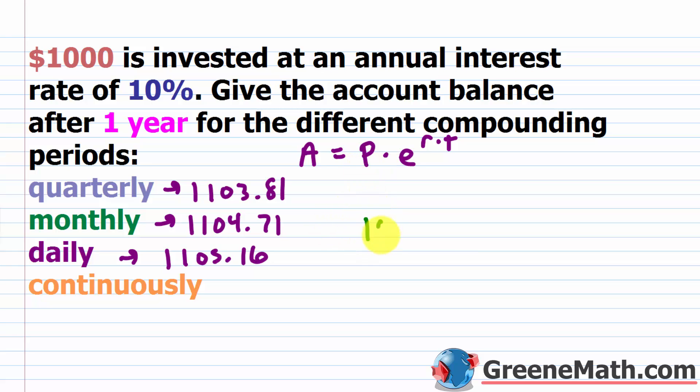In this case, P again is the principal, so it's 1000 times E, and that's going to be on your calculator, raised to the power of R, which is 0.1, and then times T, which is 1. So really, you can just get rid of this part and say we have 1000 times E raised to the power of 0.1. And if you punch that up on a calculator, you get about $1,105.17. So you can see it's very close to what we got with daily.